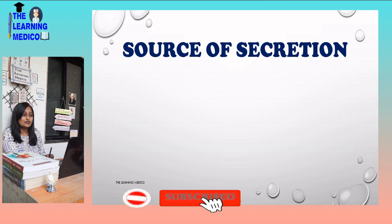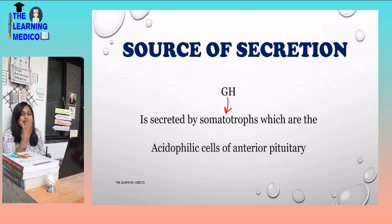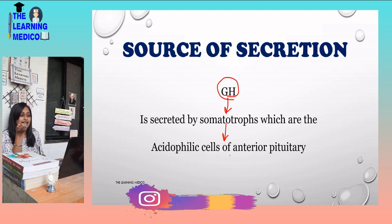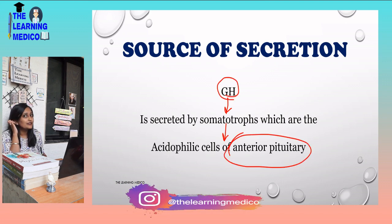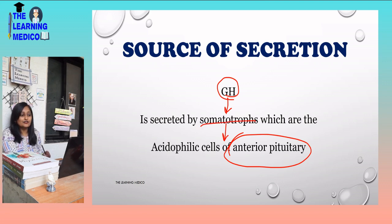What is the source of secretion of Growth Hormone? Growth Hormone is secreted by the somatotropes, which are acidophilic cells of the anterior pituitary. This is the main important point — Growth Hormone is secreted by the somatotropes, which are the acidophilic cells of the anterior pituitary.